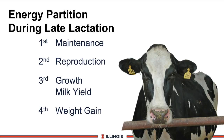In late lactation, energy partitioning shifts. The cow still wants to stay alive first. If she becomes pregnant, she now protects the fetus as the second priority — she will give up all other bodily functions to maintain pregnancy. Then comes growth and milk production (which takes precedence is less clear), and finally weight gain. If a late-lactation cow is thin, you must pay all those other energy costs first before she will gain body weight for the next lactation.